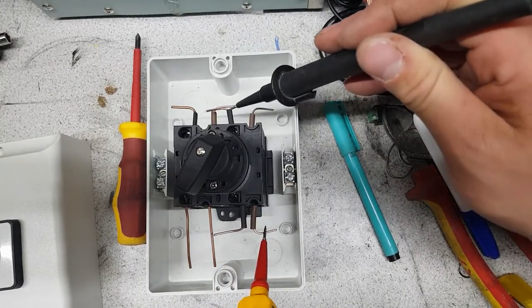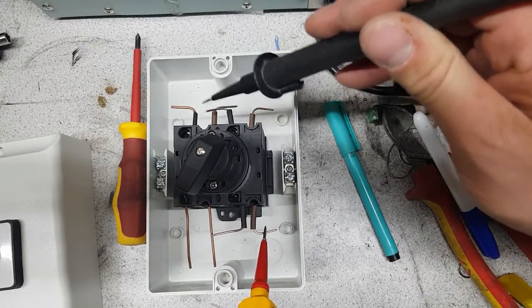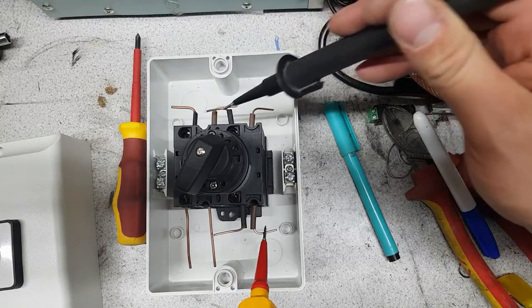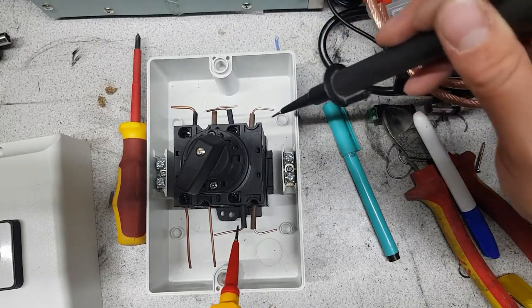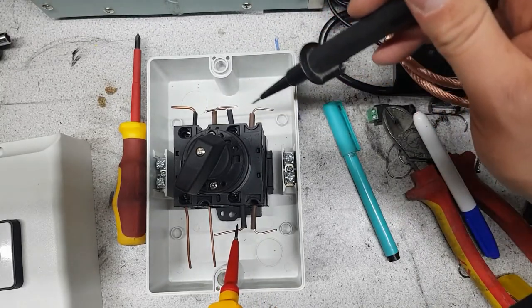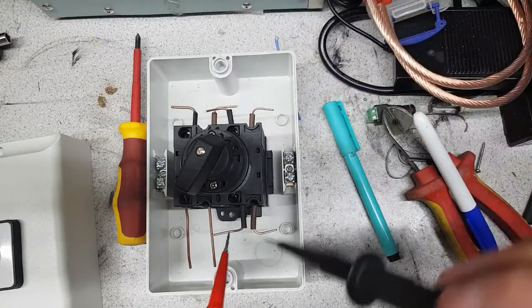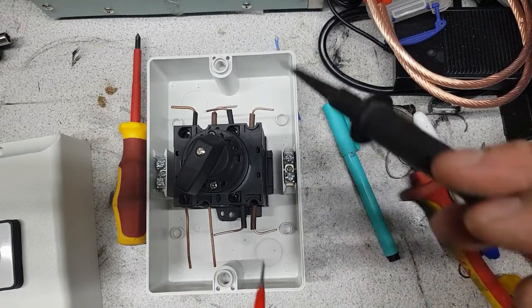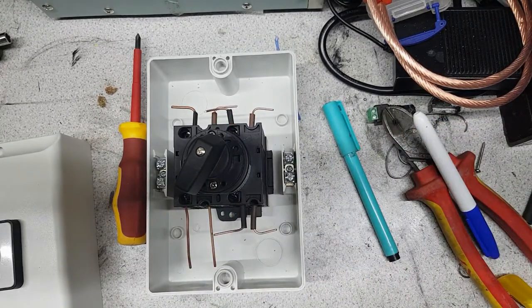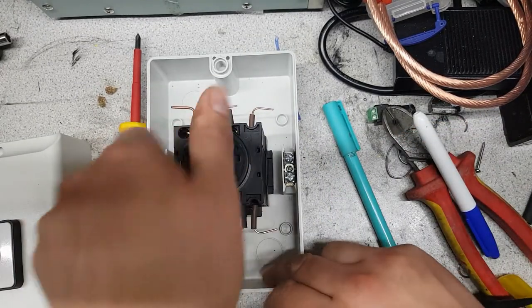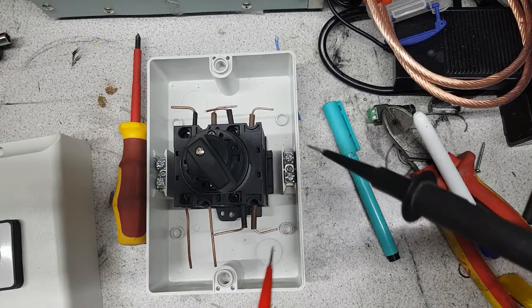And between that, we have on the brown no continuity on any of these other terminals except for that one. Same for this one - continuity there, but not between any of the other three. So if we use this as our output and this is our input, we should be perfectly fine. We switch this over to position number one.